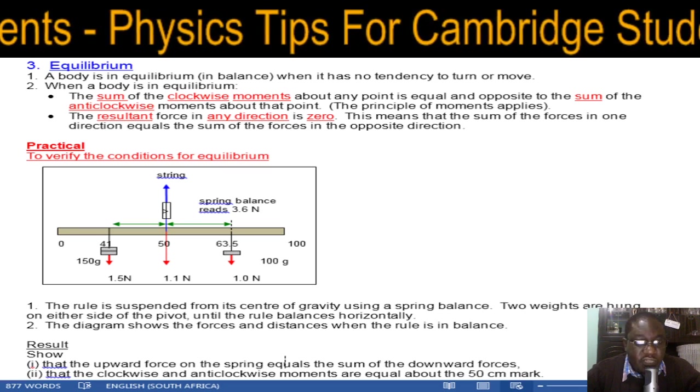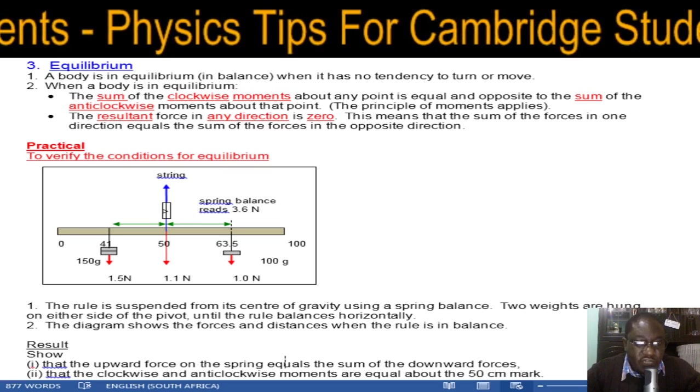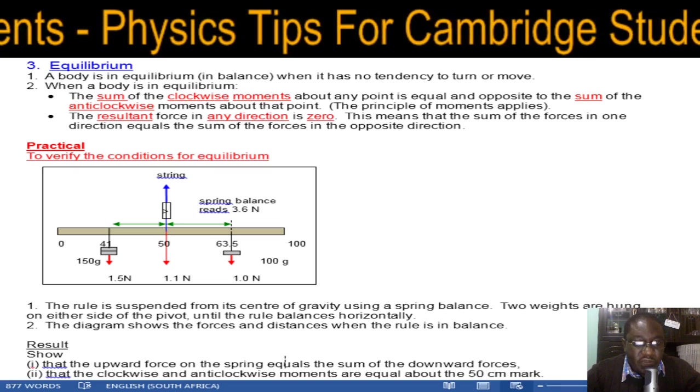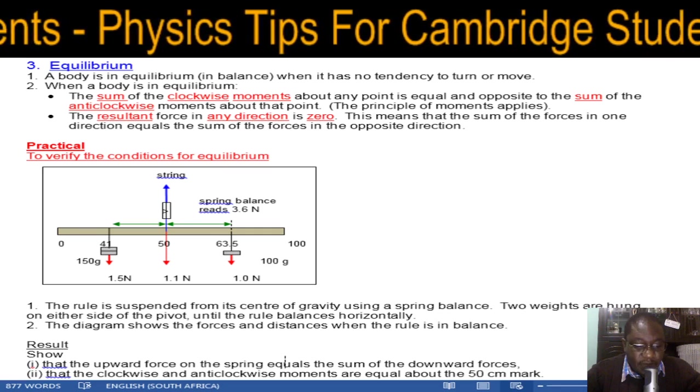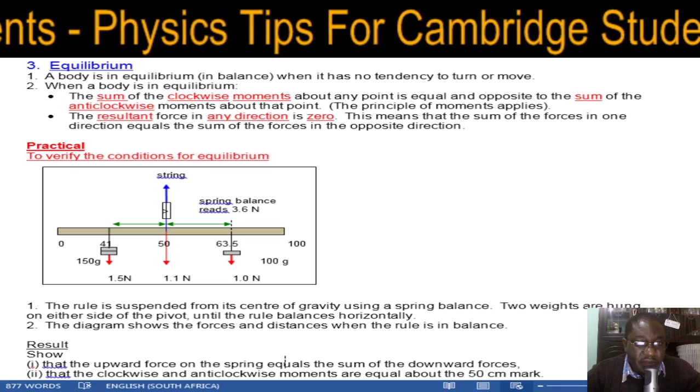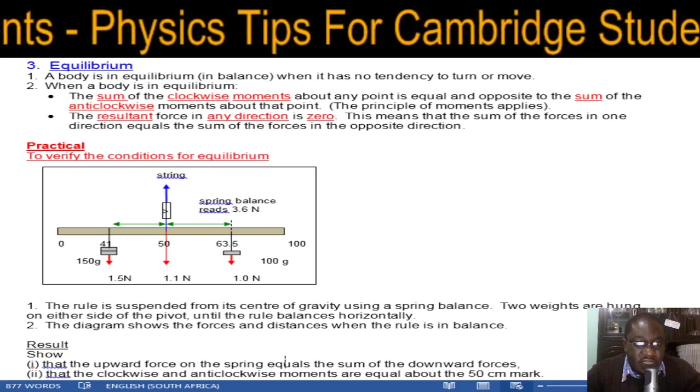We talked about clockwise and anticlockwise moments, and when a body is balanced, we have the clockwise moments equaling the anticlockwise moments. This leads us to equilibrium. A body is in equilibrium or in balance when it has no tendency to turn or to move.